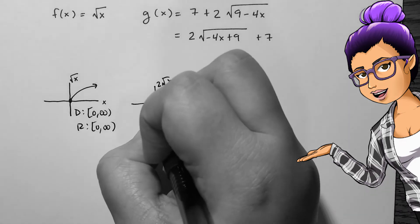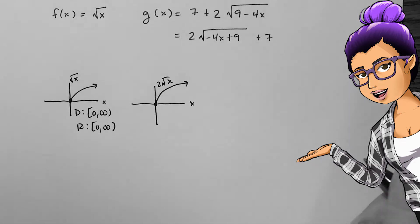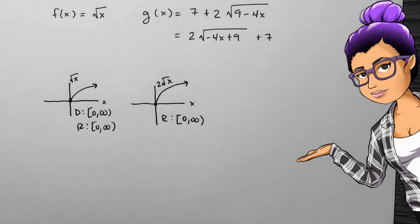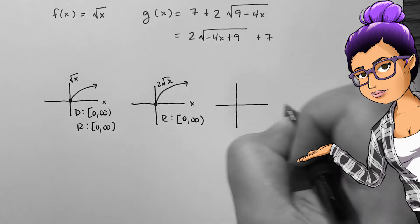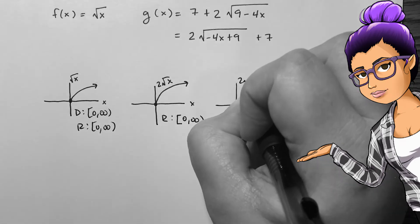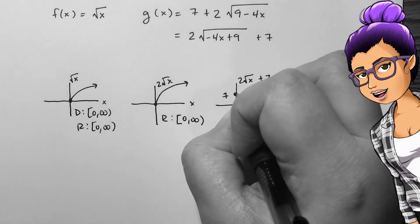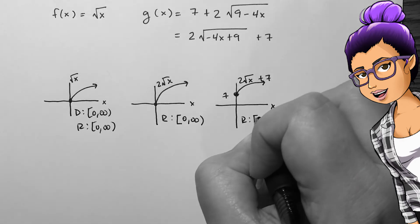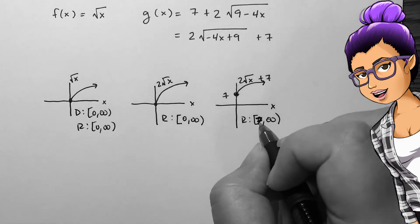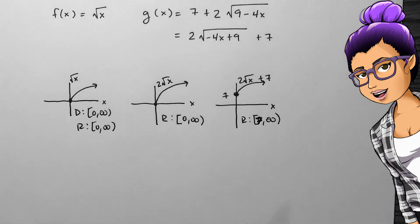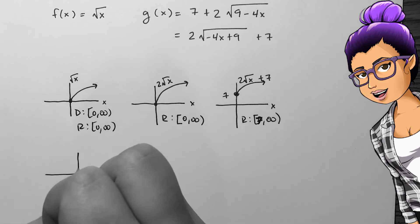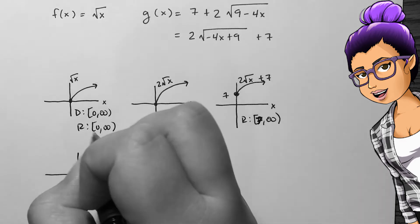According to my order of transformations, I need to stretch this range by 2, leaving 0 to infinity again, since 0 times 2 is 0 and infinity times 2 is infinity. The range stays the same, but the graph looks different. Next, I need to shift up by 7 units. The range is now 7 to infinity, and this is the resulting graph. That's our final answer for the range, so let's look at the domain.